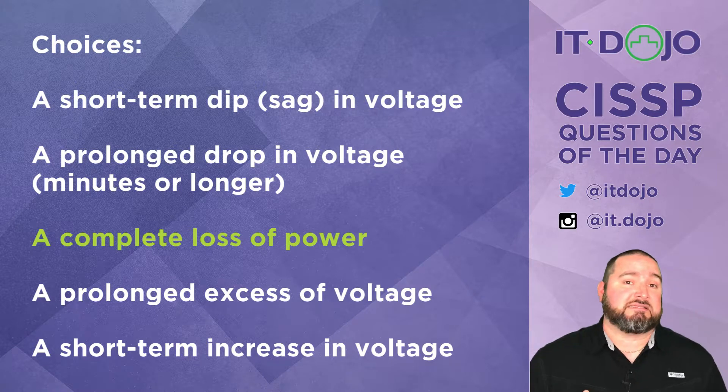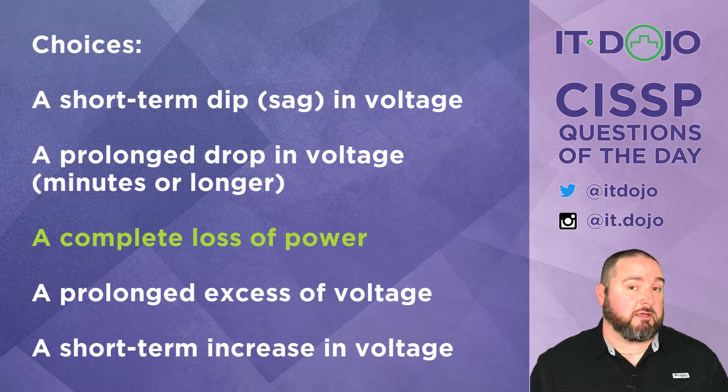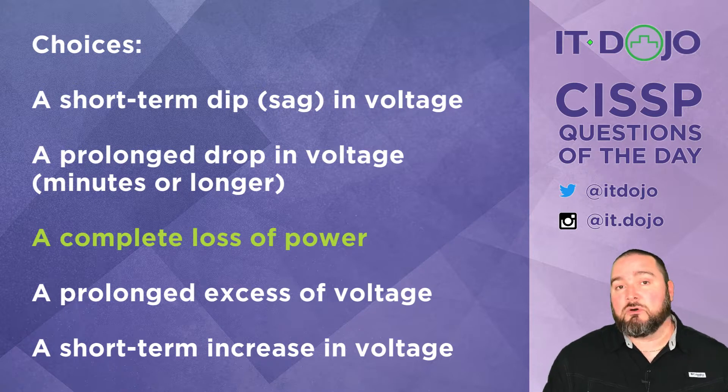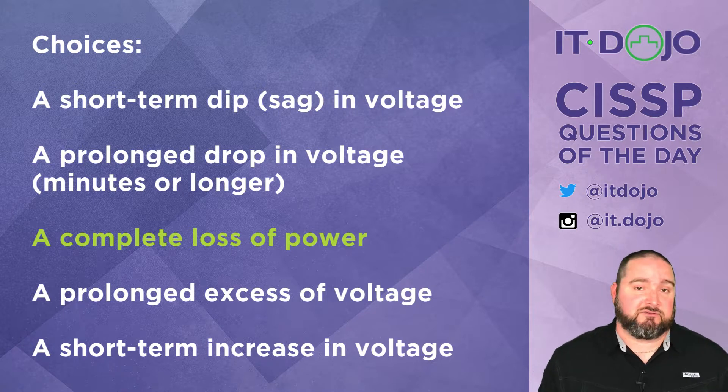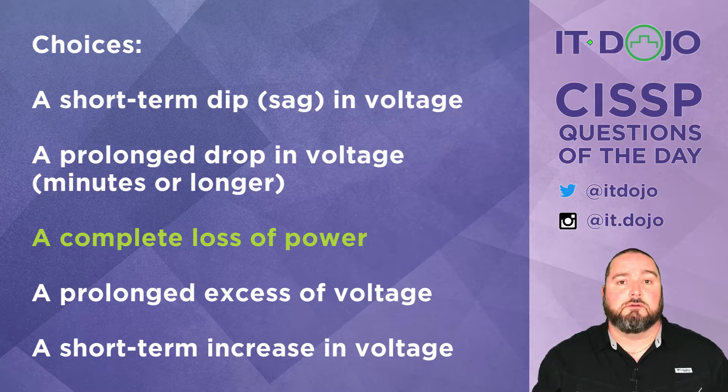A prolonged excess of power is known as a swell. And then a momentary excess of power — the final choice — is known as a surge.